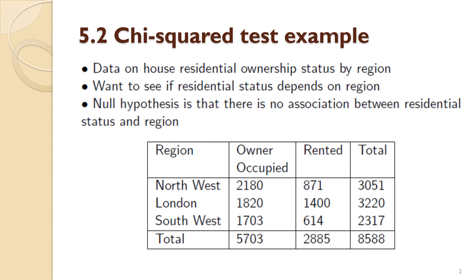For this example, what you've got in this table is a very simple contingency table. What you're looking for is a table that can be expressed in a grid format. You've got some category going up and down — things going down are called columns and the things going across are called rows. I have a feeling there may be a typo somewhere in some of my lecture slides.